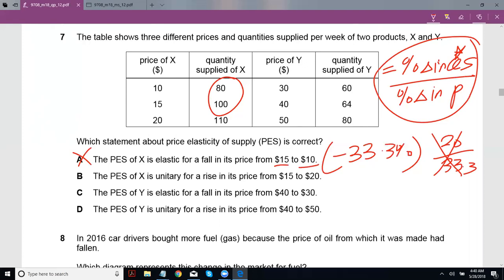The PES of X is unitary for a rise in its price from 15 to 20. Now if you're going to go from 15 to 20, that's 20 minus 15 divided by 15 into 100. So that's like again a 33, is a positive 33.3% change. And for this to be unitary, this also has to be a positive 33.3% change, which isn't true. We can see that this is clearly a positive 10% increase.